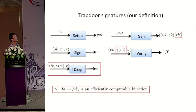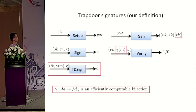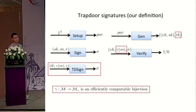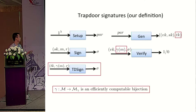This is our definition of the trapdoor signatures. In the key generation algorithm, the algorithm outputs VK, SK, and additionally a trapdoor key TK. The signing procedure is the same as standard signature schemes — it uses SK to sign the message. The verification algorithm takes as input VK, gamma(m), and sigma, where gamma is an efficiently computable bijection, and it doesn't need to know m to check the correctness of the signature. Additionally, there is another algorithm, td-sign, which can directly sign gamma(m) by making use of the trapdoor key TK.